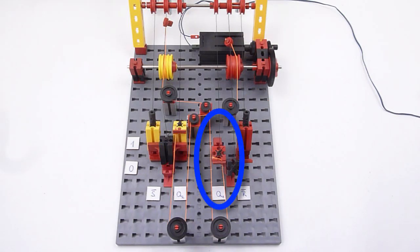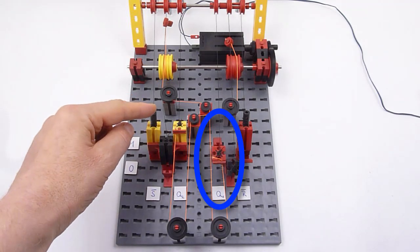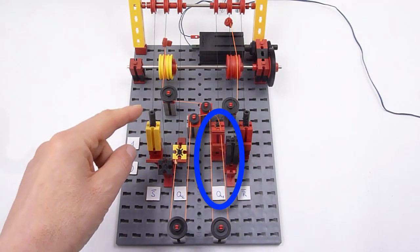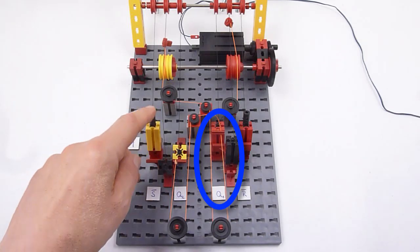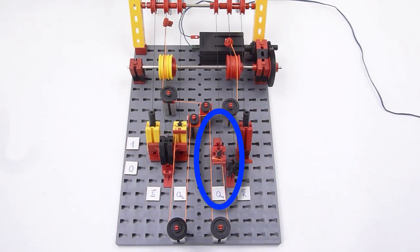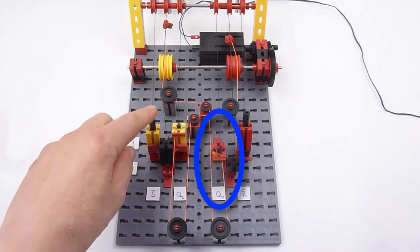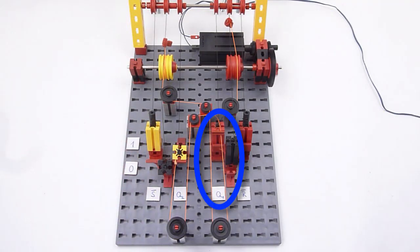Look at the output Q1. We can set it by pulling S-bar to zero. It will remain in this state until we pull R-bar to zero. Then it will keep its state until S-bar is pulled to zero again. The flip-flop hence stores one bit of information.